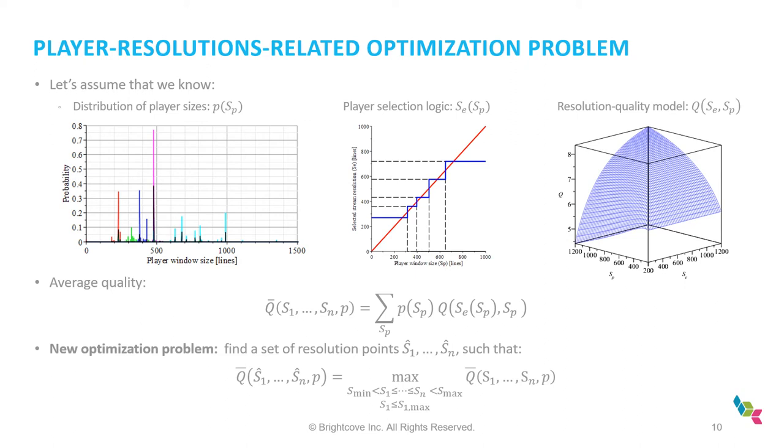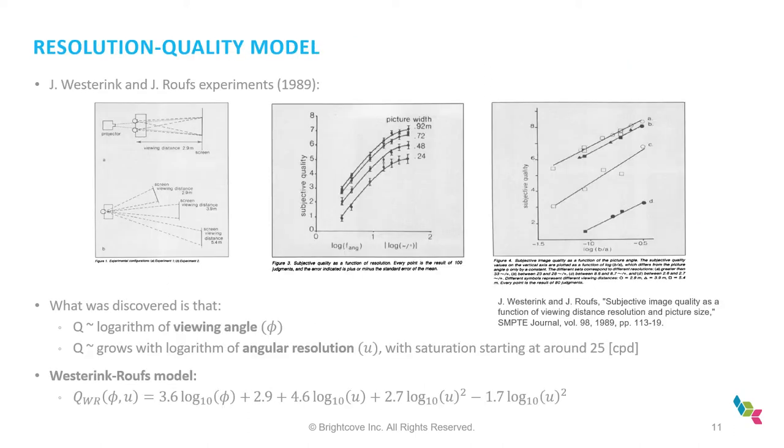I'll talk a bit more about this model, this particular model. But so far, let's assume that we just have this. And in this case, it's sufficient to think that two parameters are essential, which is resolution of encoded content and player resolution SE and SP respectively. And then if we have all of this, we could compute what would be the average quality rate. And we could pose optimization problems that looks exactly dual to the ones that we've shown before. So it's find a set of resolution points such that the quality is maximum.